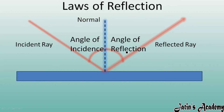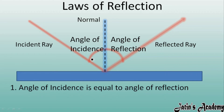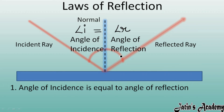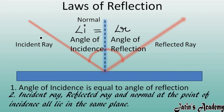The first law of reflection states that the angle of incidence is always equal to the angle of reflection. That is, angle i equals angle r. Whatever angle the incident ray makes with the normal, the same measure of angle is made by the reflected ray with the normal.